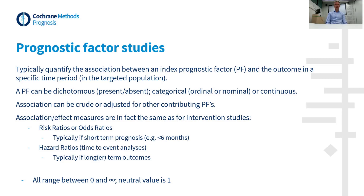In case there are short-term outcomes, researchers tend to use risk ratios or odds ratios, and for longer-term outcomes, they typically use time-to-event analysis and present hazard ratios. All ratios range between 0 and infinity, and their interpretation is exactly the same as we are used to from intervention and causal studies. The neutral value, or the point of no effect of these ratios, is 1.